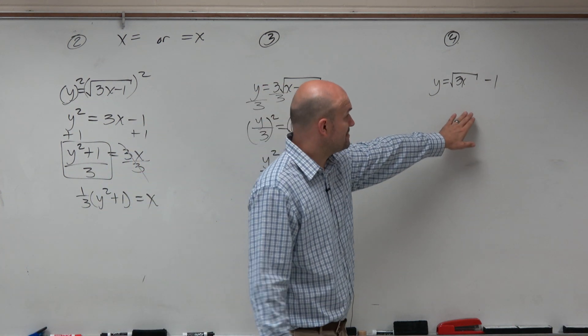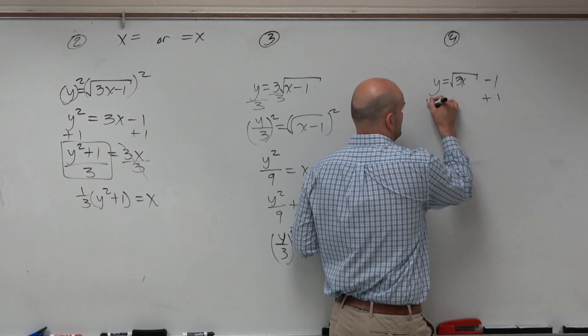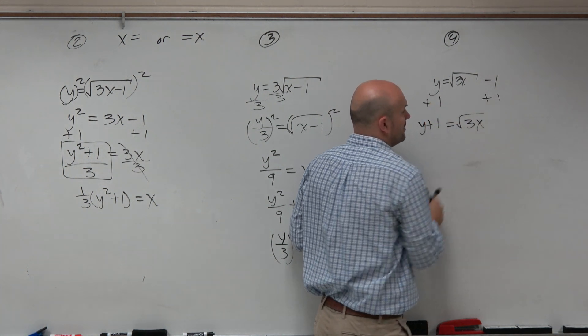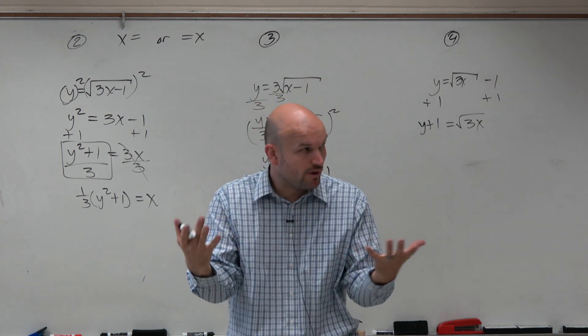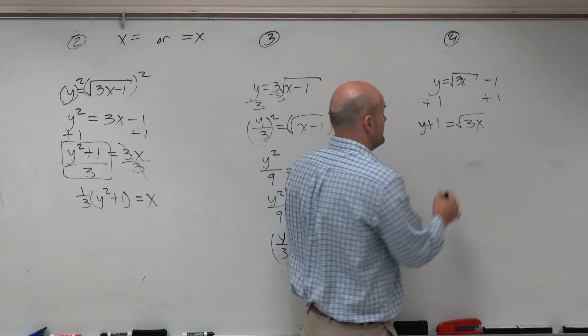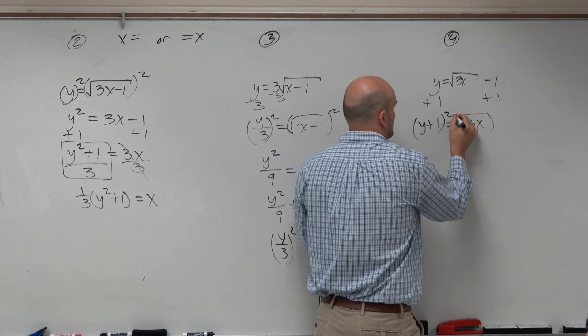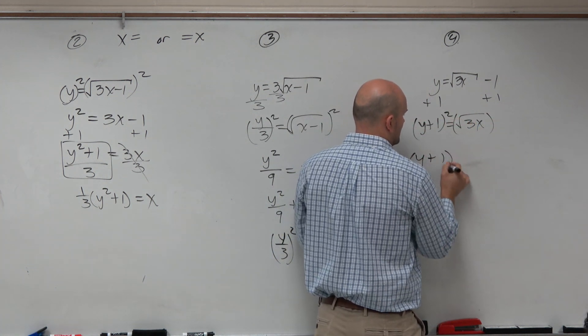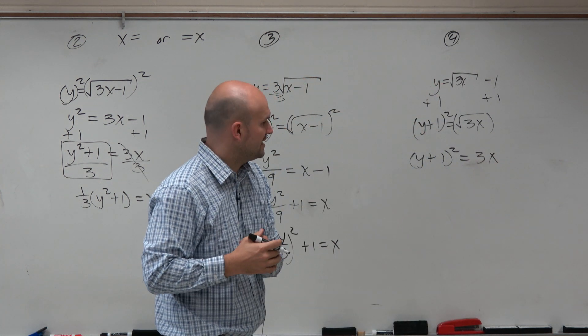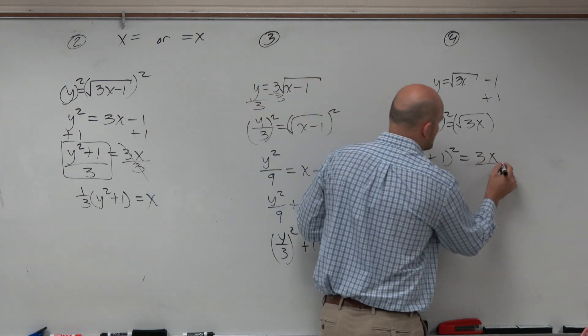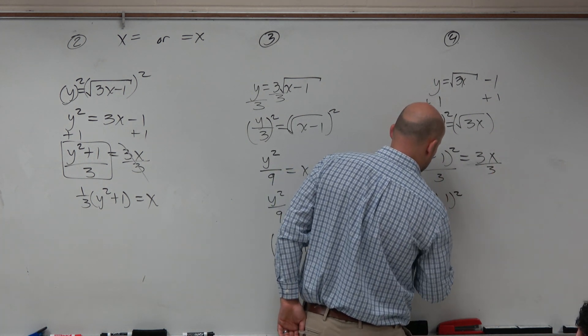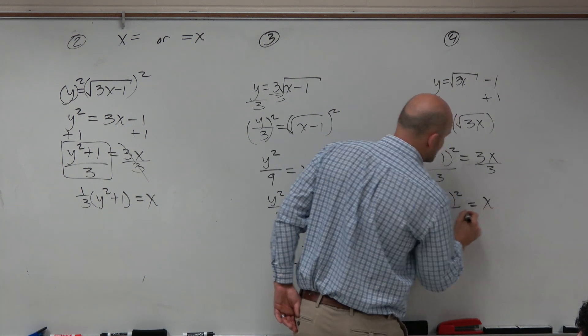Now, this one kind of brings in the same example. So before you can square, you've got to get the square root isolated. So I add the one to the other side. Now we square this. Now, for the sake of time, I'm not going to square that out. I'll just leave that as that product squared. And then divide by 3. So y plus 1 squared divided by 3 equals x.